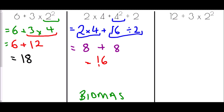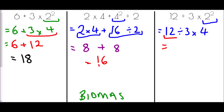Finally, 12 ÷ 3 × 2²: no brackets, so we go straight to indices — it's 2². We work out 2² = 2 × 2 = 4. Then we have division and multiplication; the division appears first, so we do 12 ÷ 3 = 4 first, then multiply: 4 × 4 = 16.